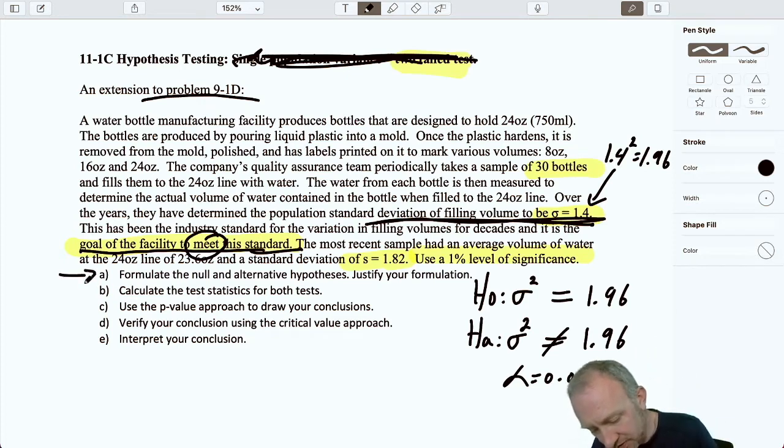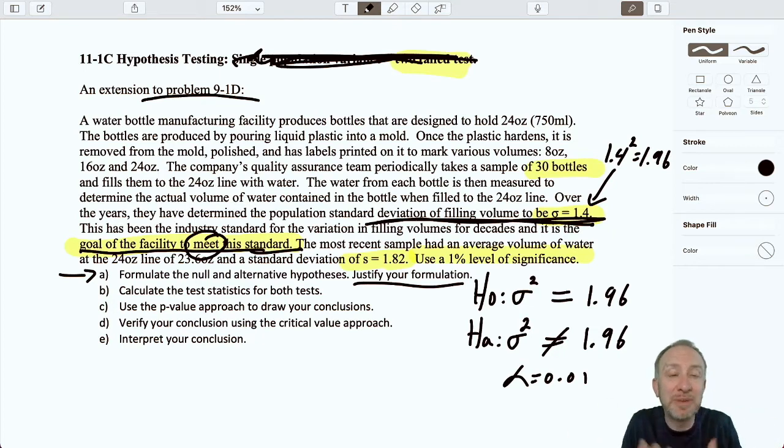To justify this, if the evidence supports the null hypothesis, then that supports our target. That means that we have been successful at meeting this industry standard. If the evidence supports the alternative hypothesis, that's indicative that we have a problem. We have not met this industry standard in terms of the variance of our filling volumes. If the evidence supports the null, we've achieved that standard. If the evidence supports the alternative, we have not achieved that standard.